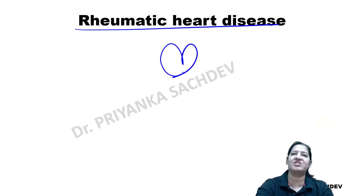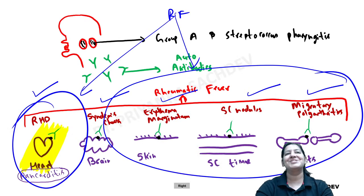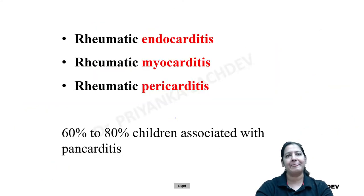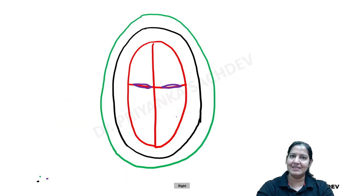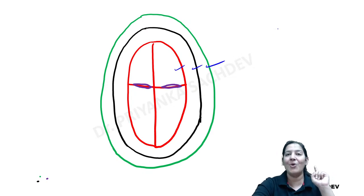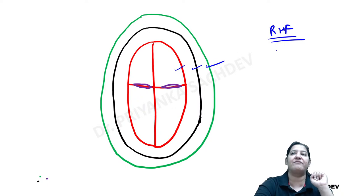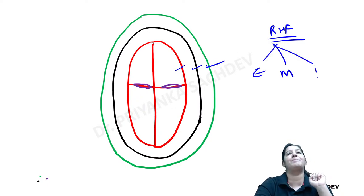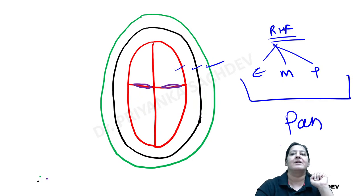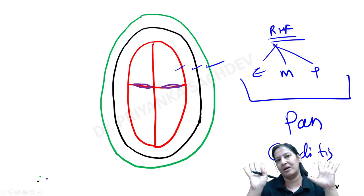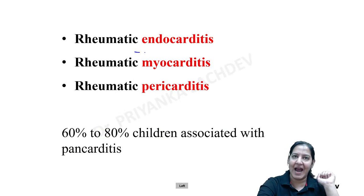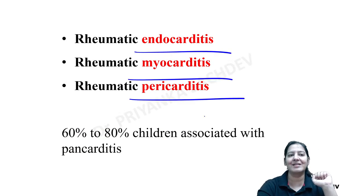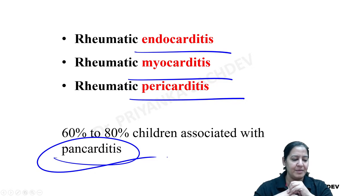Rheumatic heart disease is the cardiac manifestation of rheumatic fever. In rheumatic heart disease, not only the endocardium but also the myocardium and pericardium are involved. All three layers are inflamed — there is endocarditis, myocarditis, and pericarditis. In short, there is pancarditis. Pan means all layers are inflamed. Pancarditis is the hallmark of rheumatic heart disease.